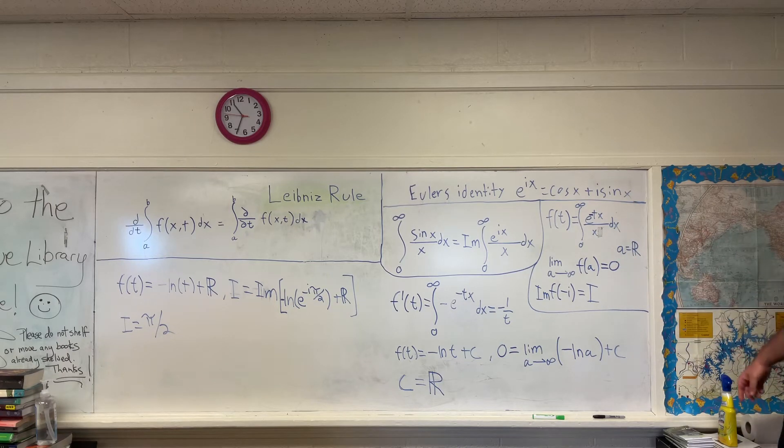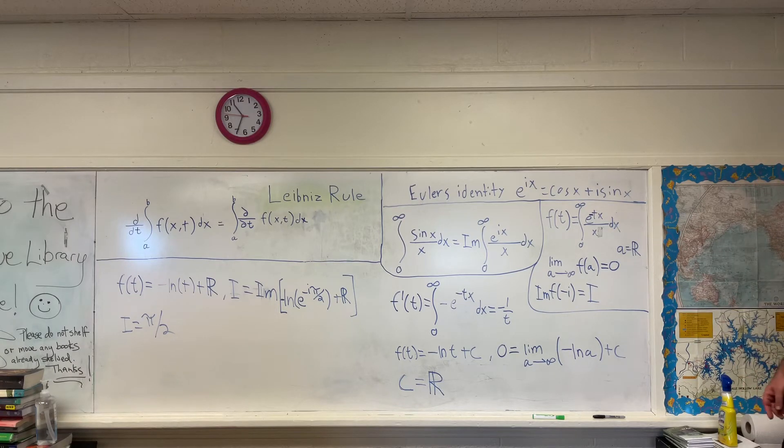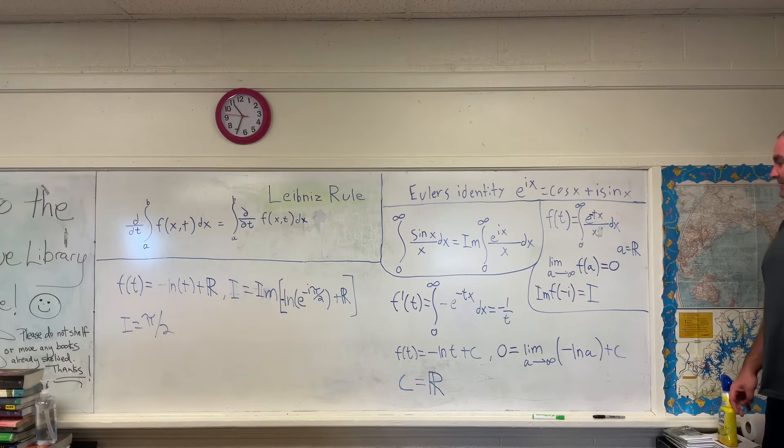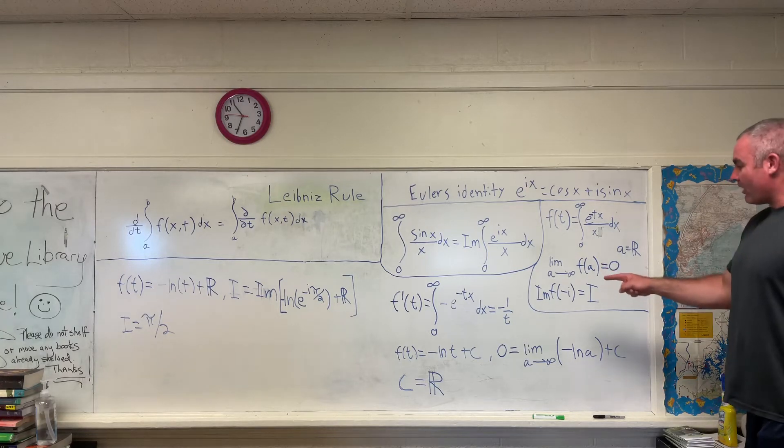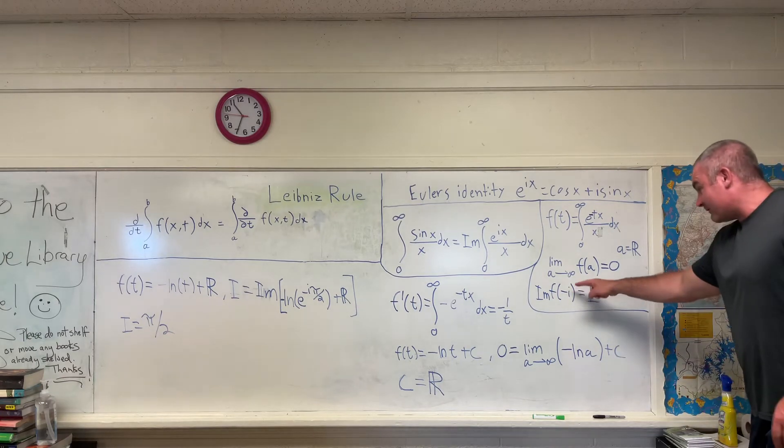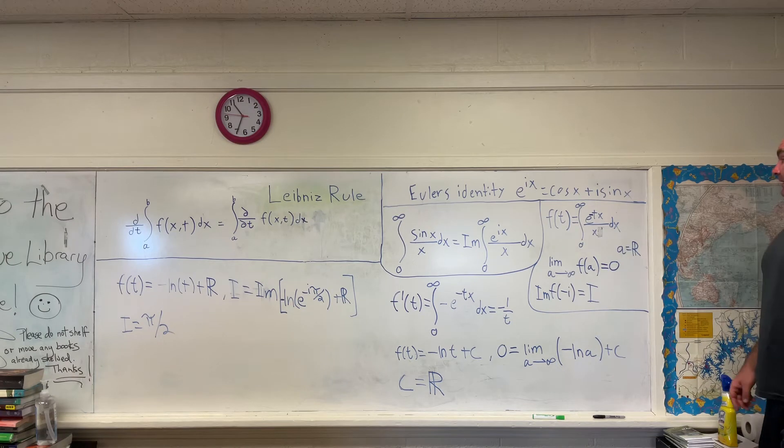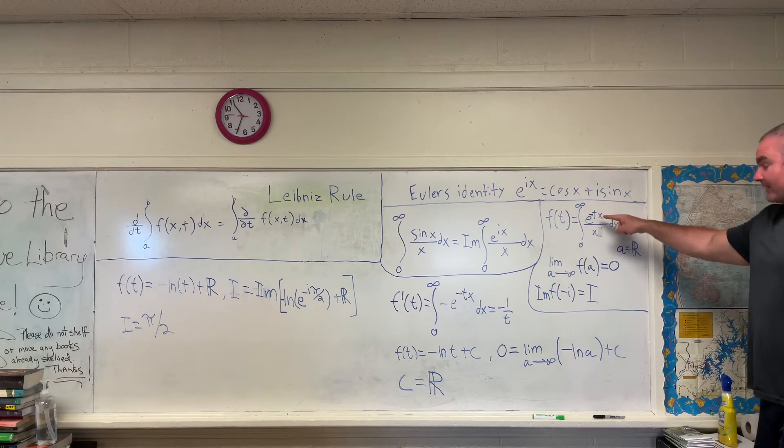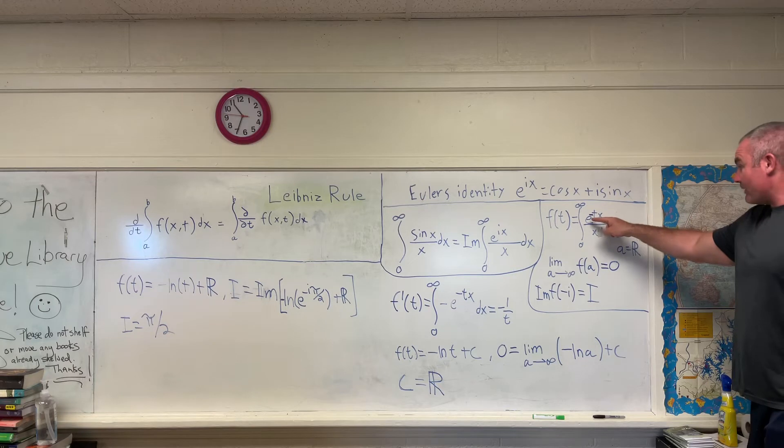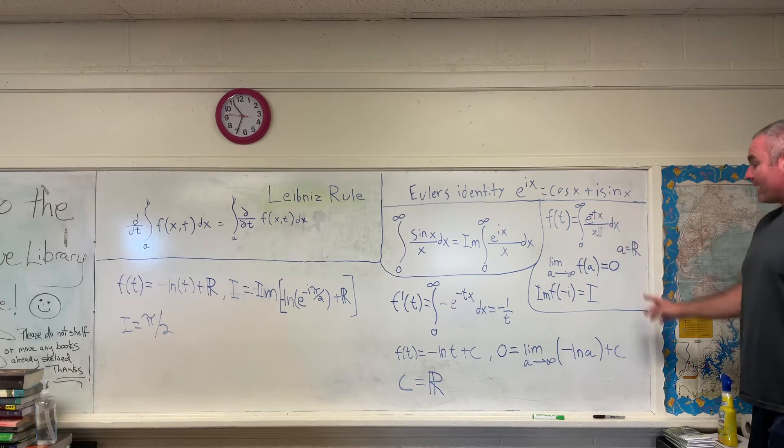And it's important to note that in this case, a is a purely real number. It has no imaginary component. The second thing we're going to note is that if you take the imaginary part of our function of t evaluated at the point negative i, you will get our original integral. So if you plug in negative i for t, the negatives would cancel out and you would be left with e to the ix dx over x.